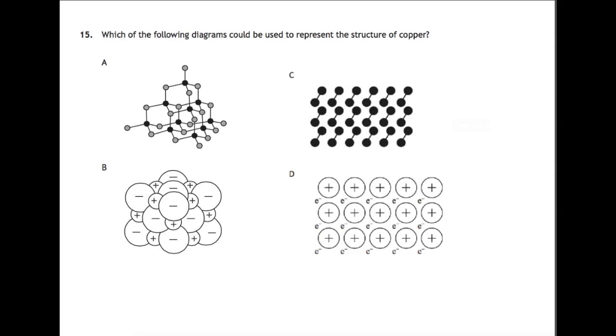Which of the following diagrams could represent the structure of copper? For this you need to know what type of element copper is. Copper is a metal. The structure of a metal is that of positive cores surrounded by a sea of delocalized electrons. So we're looking for positives and negatives and those negatives being electrons, which would lead us to D. A is a covalent network, B is an ionic lattice, C are covalent molecules and D is a metal.